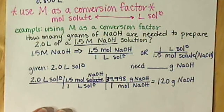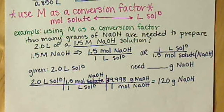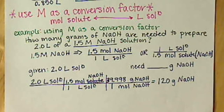That's how we use molarity as a conversion factor — a very powerful calculation. This adds another pathway to our mole road, and in the next section we'll add to that mole road and work through some examples converting on the big mole pathway.